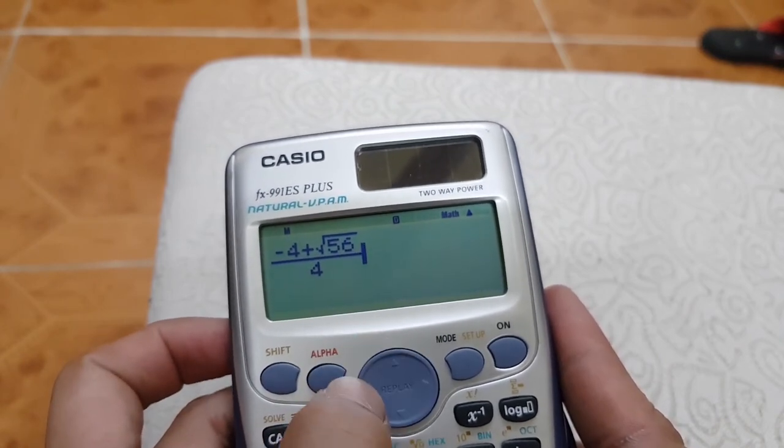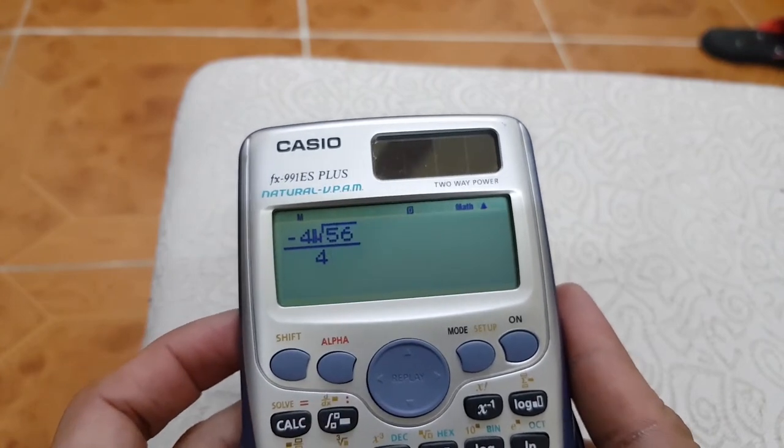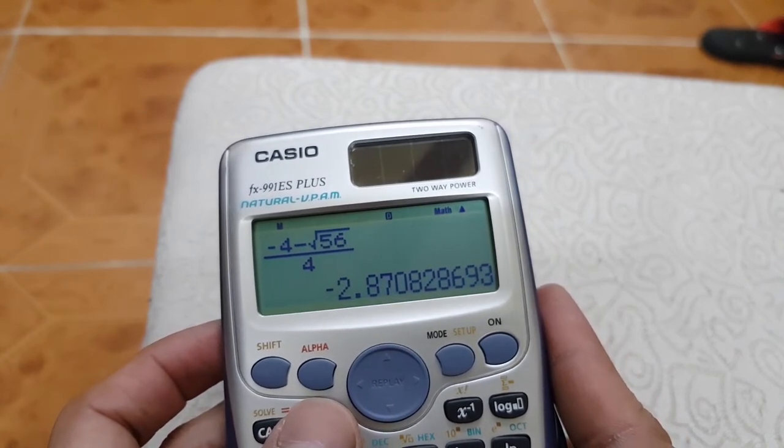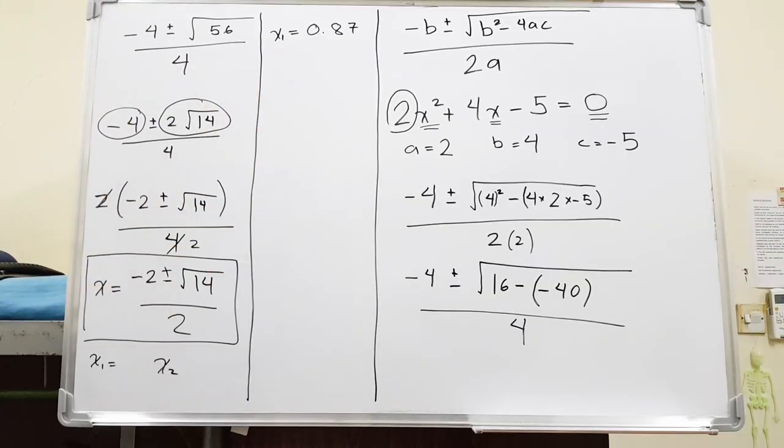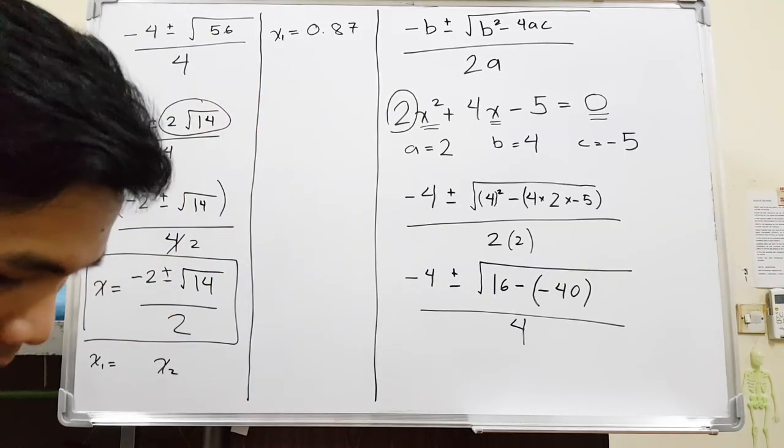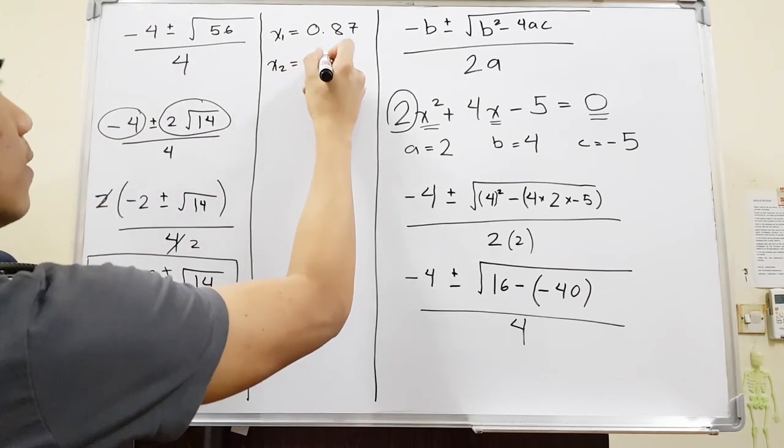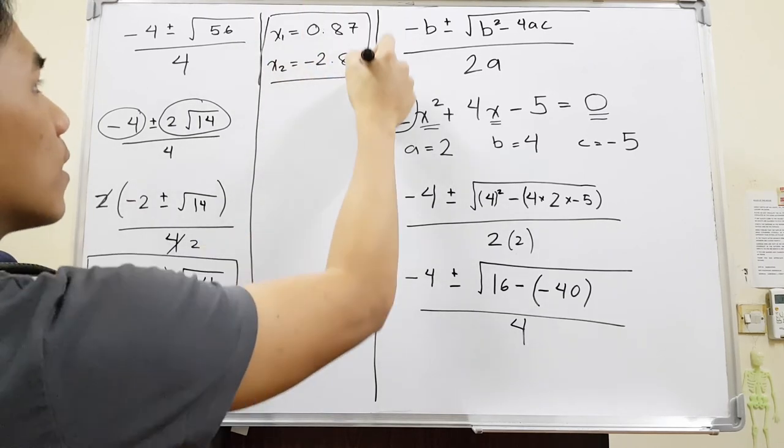Now go back, just change the plus into minus to get our second answer. And that is approximately negative 2.87. So for our first answer, it's 0.87 to 2 decimal places. For our second answer, it is equivalent to negative 2.87. And those are the possible answers.